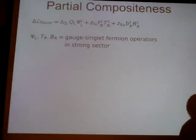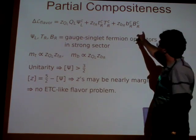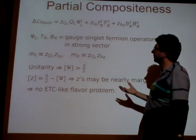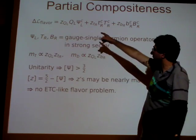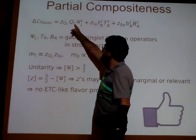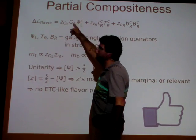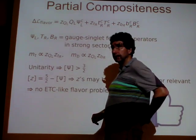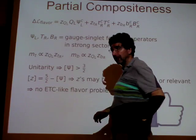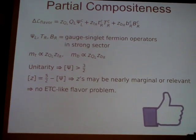[Question:] Could you elaborate on what you mean by 'partial'? [Answer:] Because of these couplings, the observed states are actually a mixture of these composite states and the elementary fermions — it's a mixing-type mass. The actual mass eigenstate will be a linear combination. There are some limits on how composite it can be, but it turns out you can satisfy all of those, so this is still allowed.